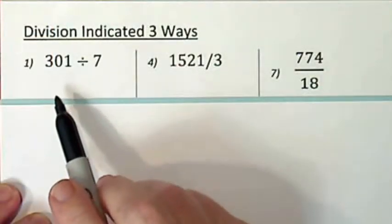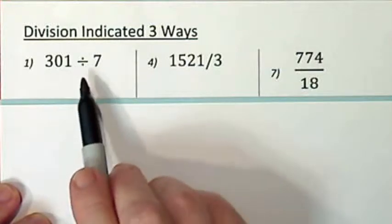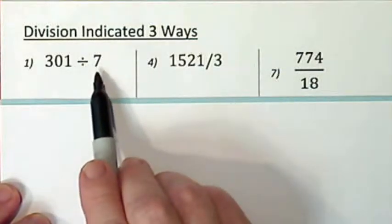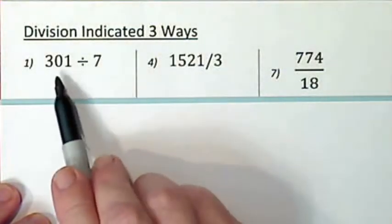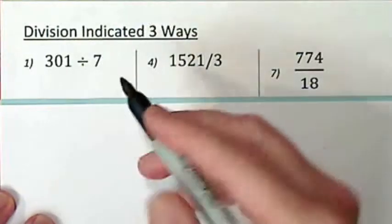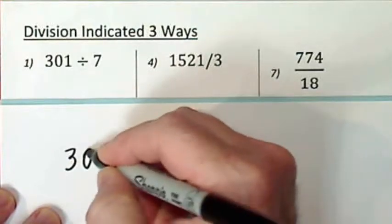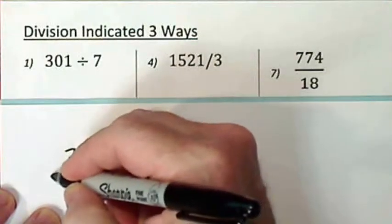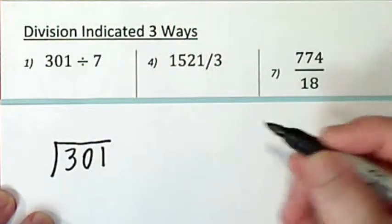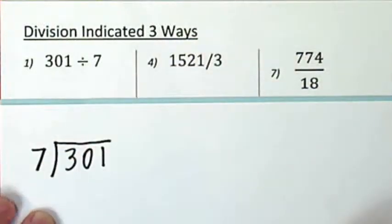Alright, looking at our first problem, a little bit of vocabulary. The number that you're going to divide in with is the divisor. The number to be divided is the dividend. And for long division, we usually set it up like this.